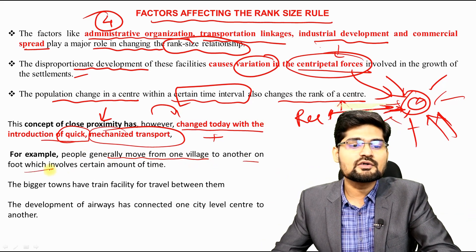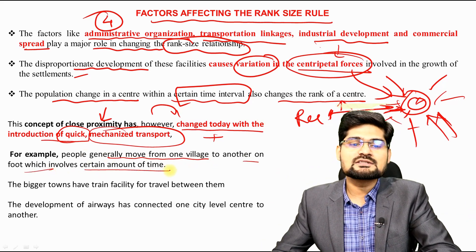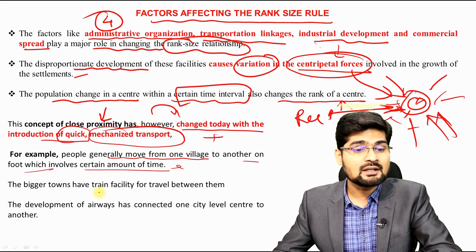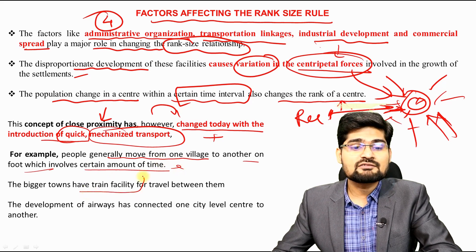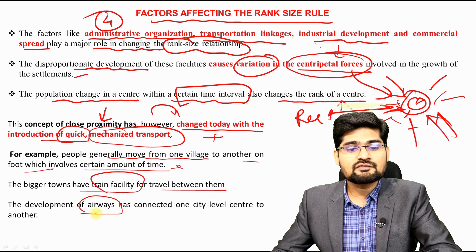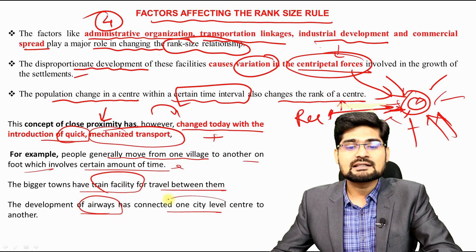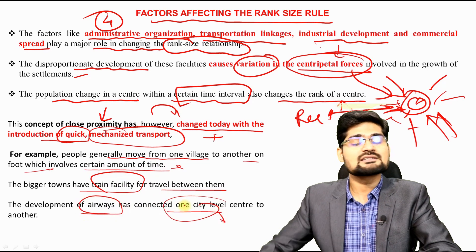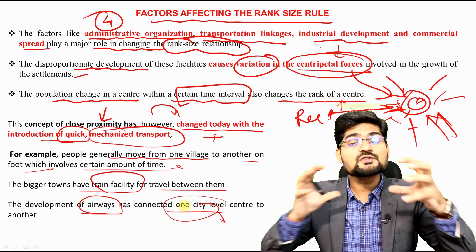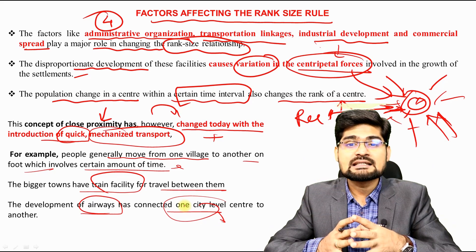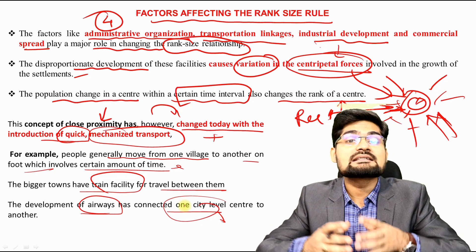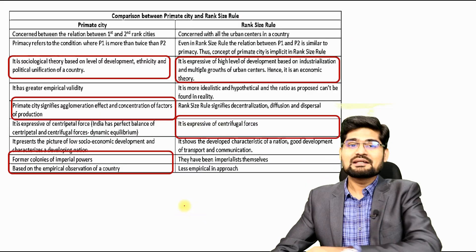For example, people used to move from village to village on foot, but now bigger towns have train facilities and the development of airways has connected cities quickly. Connections between cities are leading to changing rank-size relationships.